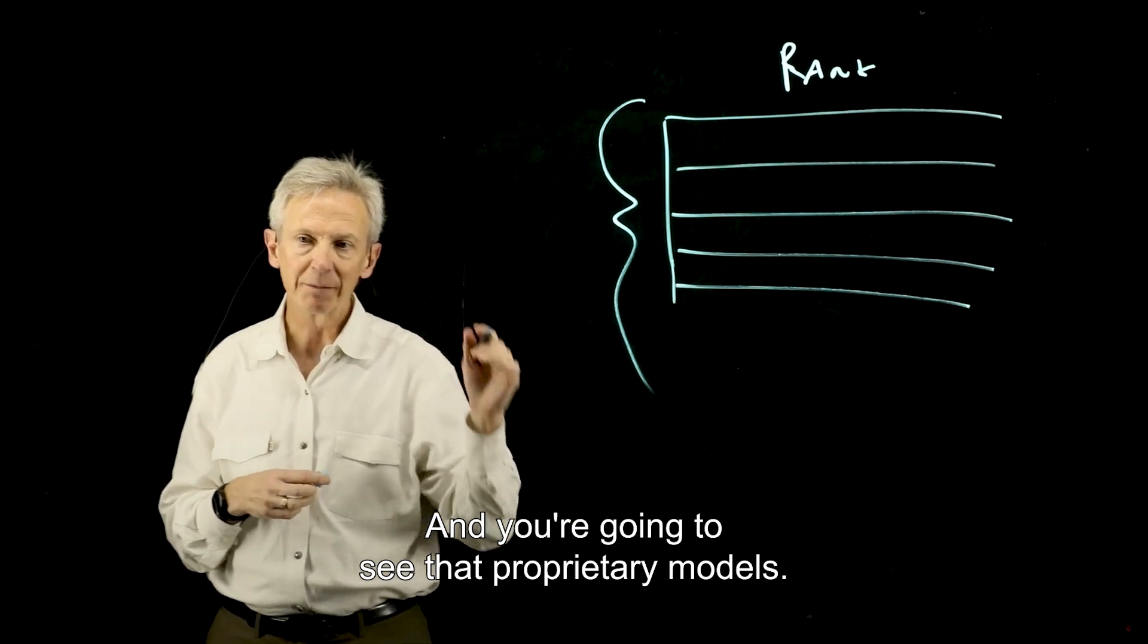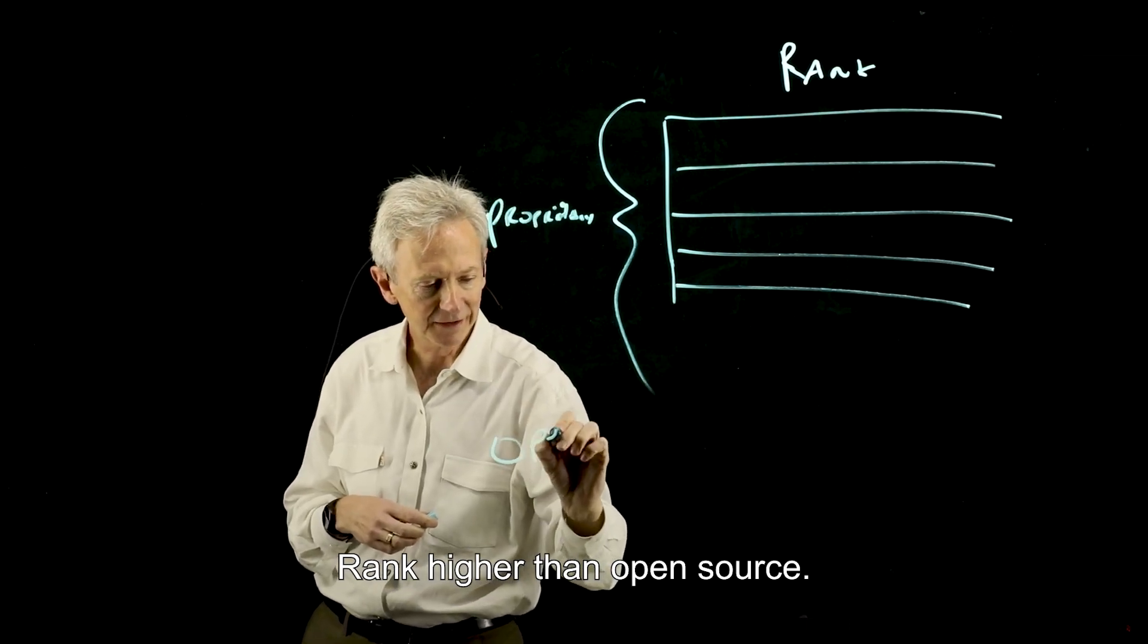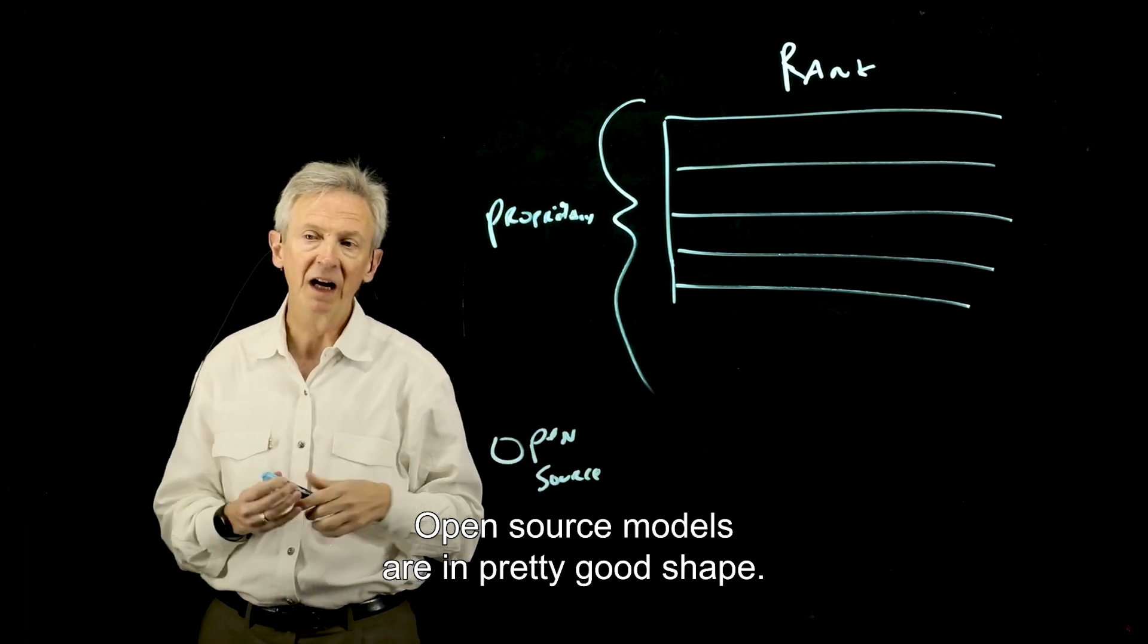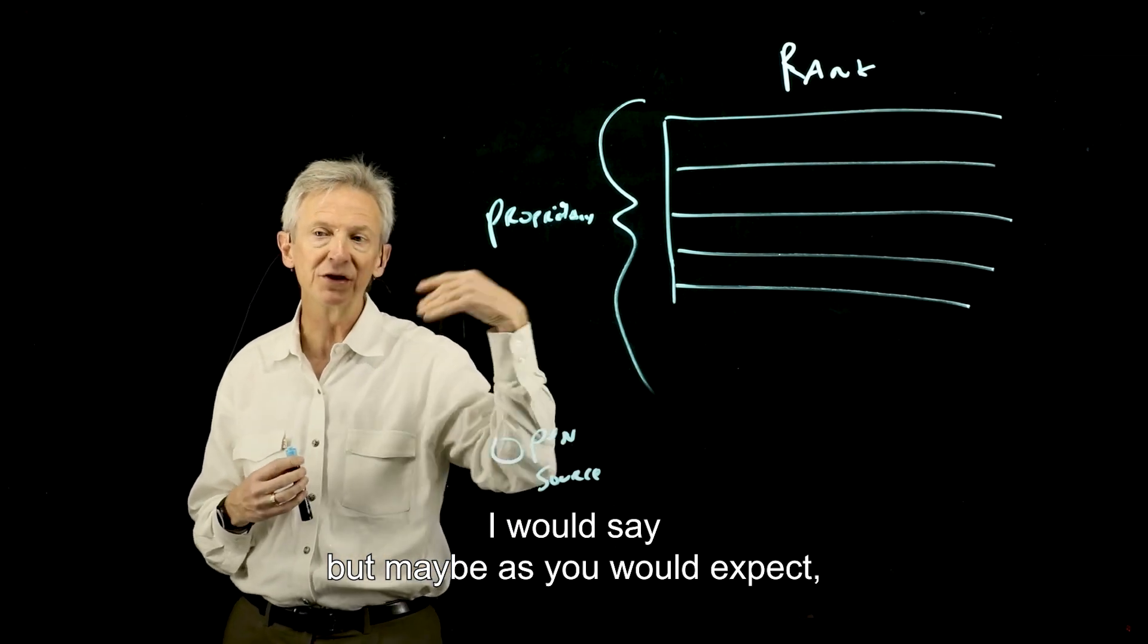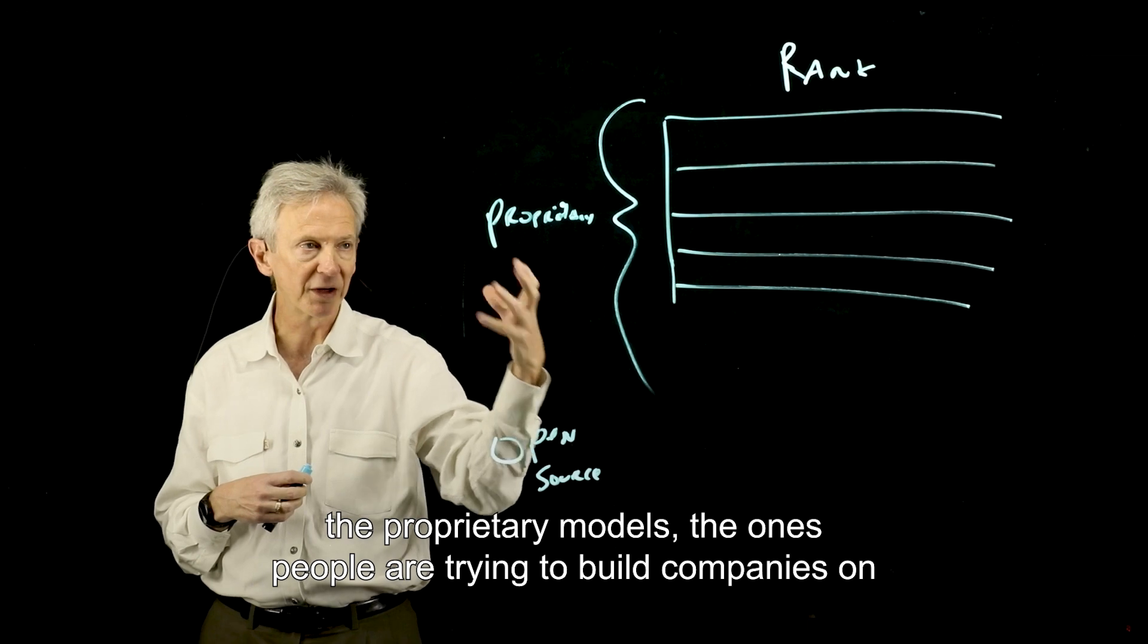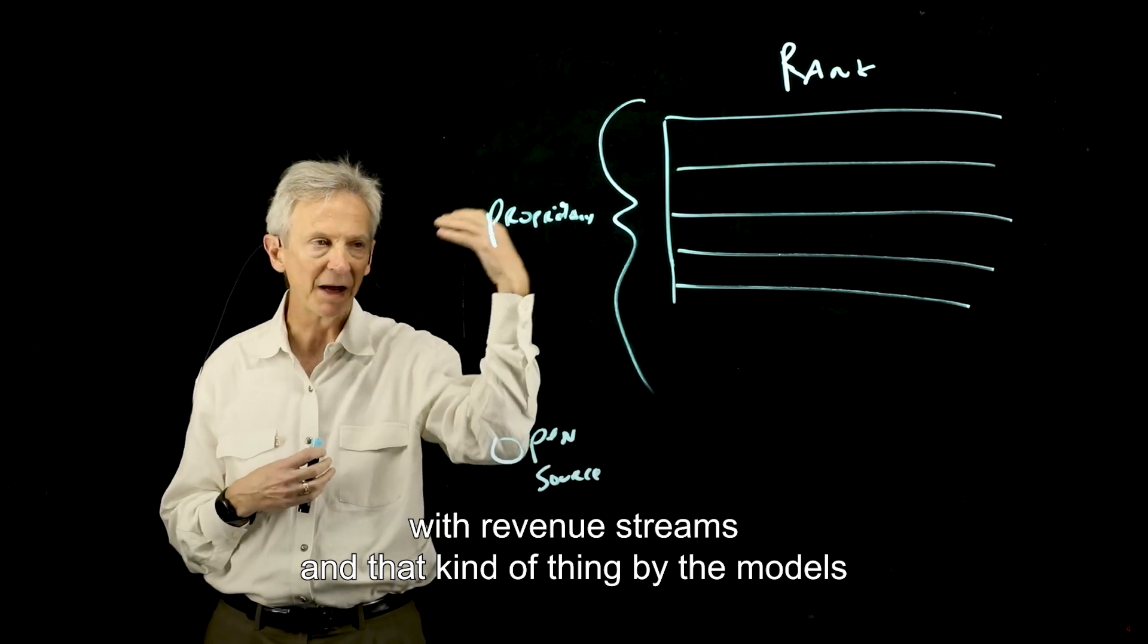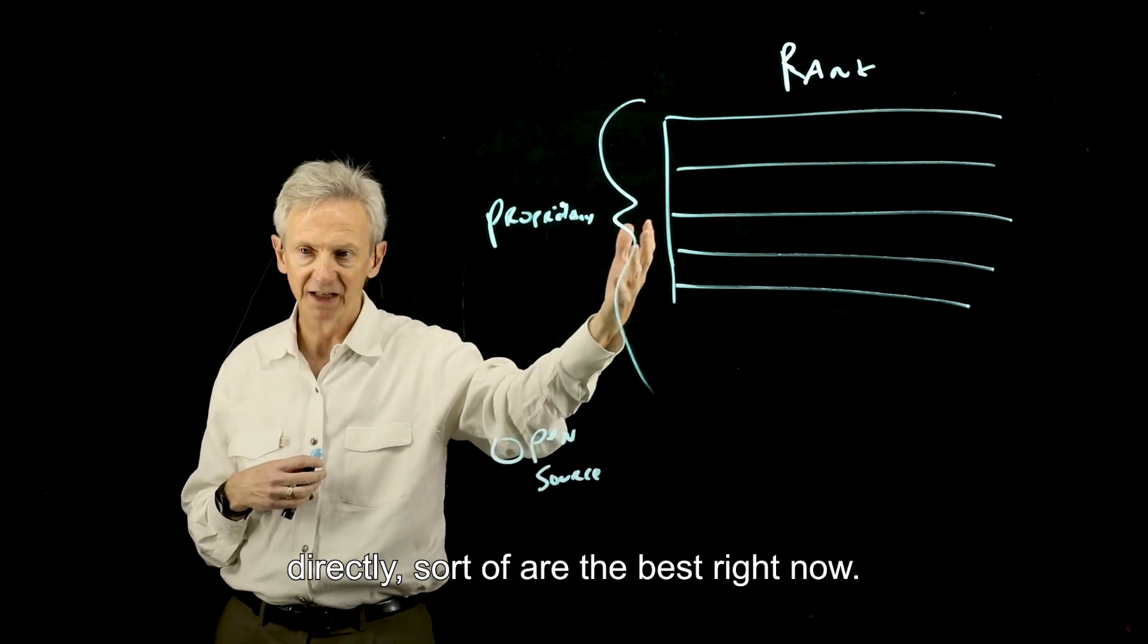And you're going to see that proprietary models rank higher than open source. Not that much higher. Open source models are in pretty good shape, I would say. But maybe as you would expect, the proprietary models, the ones people are trying to build companies on with revenue streams and that kind of thing, by the models directly sort of are the best right now.